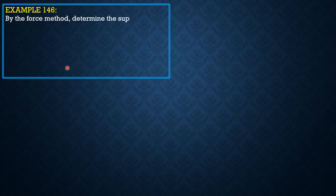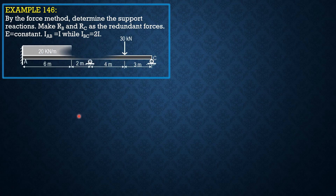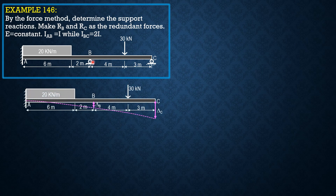By the force method, determine the support reactions. Make Rb and Rc as the redundant forces. E is constant. The moment of inertia of AB is I, while BC is 2I. So this is I and this is 2I. Let's solve this by double integration. We remove supports B and C so that it becomes a cantilever beam, so that we can analyze delta B and delta C as shown in the figure.